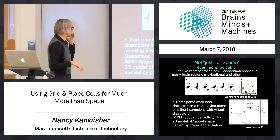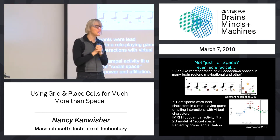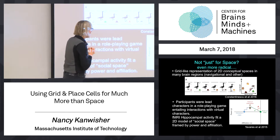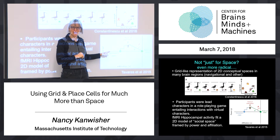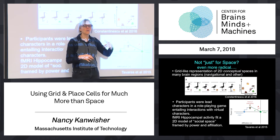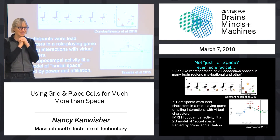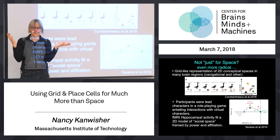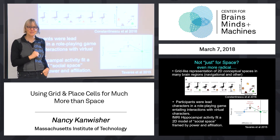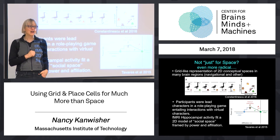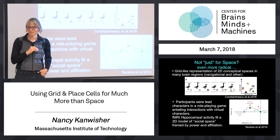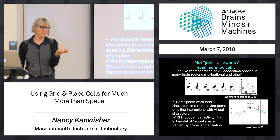Another one — this is really wacky. They had people engage in virtual social interactions in which the people they were interacting with treated them in different ways. They gave them information both about the power that person had over them and how personally close they were to that person — social dimensions that people might care about in social cognition. And they found that hippocampal cells reflected — you could predict from hippocampal cells — both the person's perception of the social distance and the power that person had over them. Pretty wild, right? This is with MRI.